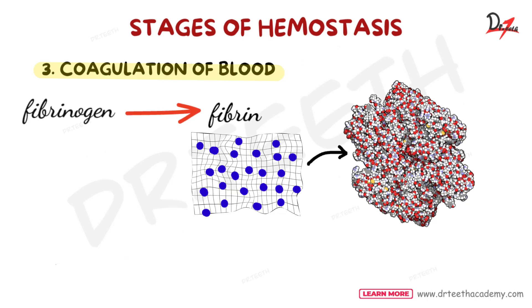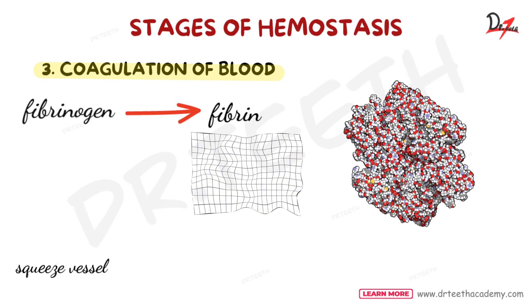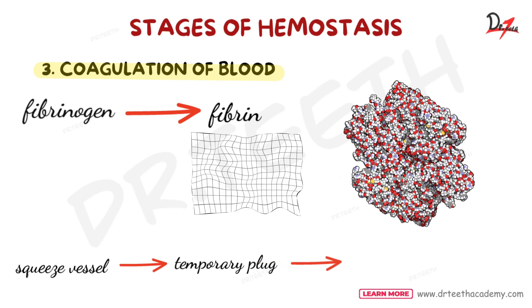So hemostasis is like a series of steps your body takes to stop bleeding — it squeezes the vessels, makes a temporary platelet plug, and then reinforces it with a fibrin net.